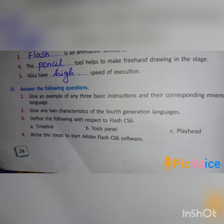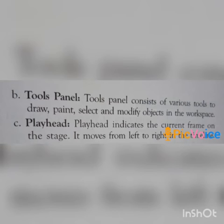Question number three: define the following with respect to Flash CS6. A: Timeline — the timeline is placed at the bottom of the window; it consists of various layers, frames, and a playhead. B: Tools panel — the tools panel consists of various tools to draw, paint, select, and modify objects in the workspace. C: Playhead — the playhead indicates the current frame on the stage; it moves from left to right in the timeline.